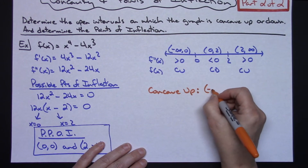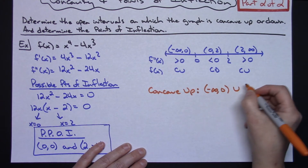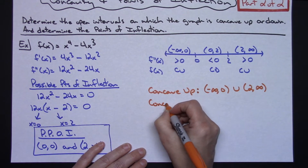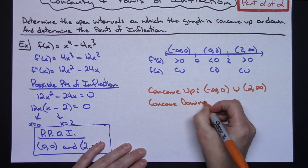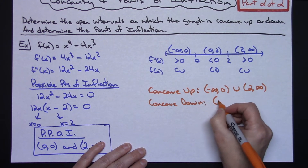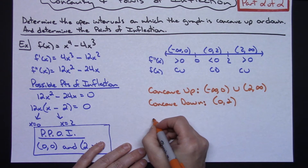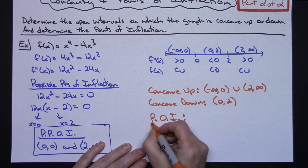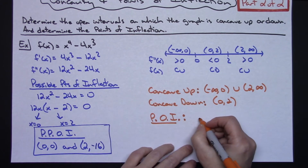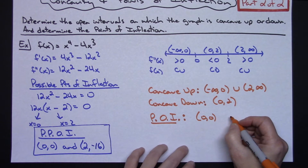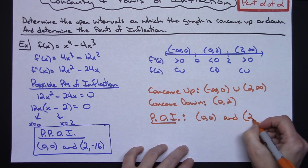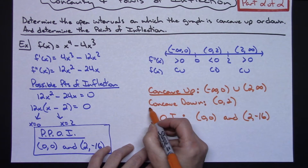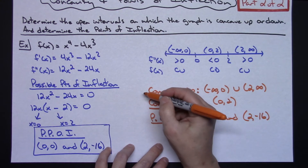To summarize: the function is concave up on the intervals from negative infinity to zero and from two to infinity. It is concave down on the interval from zero to two. The points of inflection are (0, 0) and (2, -16).